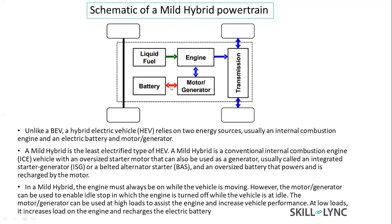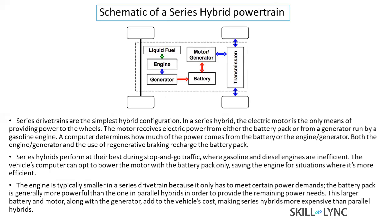A real example of a mild hybrid is the Maruti Suzuki Ciaz and S-Cross, which use mild hybrid technology. Moving on to the series hybrid: liquid fuel powers the engine, which then charges the battery pack by converting mechanical power to electrical energy. The motor is powered by the battery and drives the transmission to the wheels. This is the series hybrid powertrain.